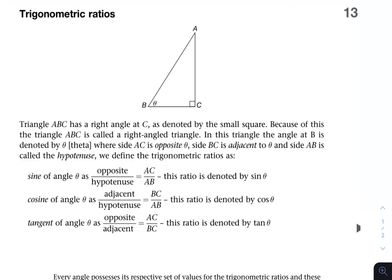Triangle ABC, in case you don't know it might get confusing but this is how you label a triangle. You call it by its three points, ABC. Has a right angle at C as denoted by the small square. Because of this the triangle ABC is called a right angle triangle. In this triangle the angle at B, theta, is denoted by the theta symbol. Where side AC opposite, so this whole side here, AC opposite, is opposite theta. So this is the opposite side. Side BC, this side here, is adjacent to theta. Adjacent meaning next to theta. So BC is right next to the angle theta. And side AB, so this side here, is called the hypotenuse.